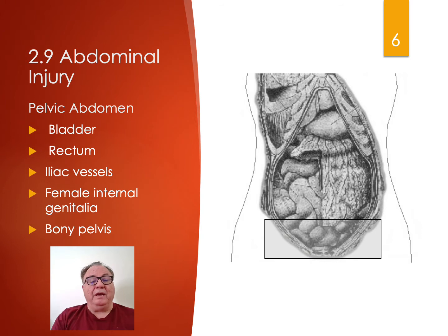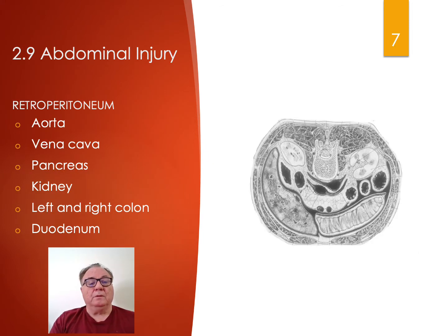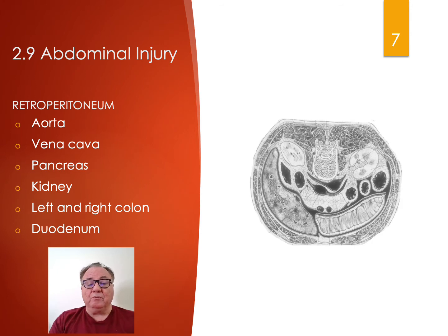And finally we have the pelvic abdomen with the bladder, rectum, iliac vessels, female internal genitalia, and bony pelvis. Behind the peritoneal cavity is the retroperitoneum, which encases the aorta, the vena cava, the pancreas, the kidney, the left and right colon, and the duodenum.